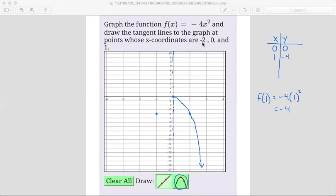Oh, but I'm supposed to do negative 2, 0, and 1. So let me actually find what it is for negative 2 as well so I can show that point. If I'm plugging in negative 2, that would be negative 4 times negative 2 squared. Negative 2 squared is positive 4. So this would be negative 4 times positive 4. Negative 4 times positive 4 is negative 16. So negative 2 would be negative 16. So let me label that point. Negative 2 is negative 16.